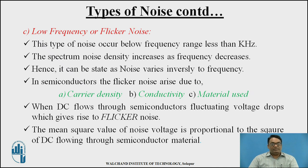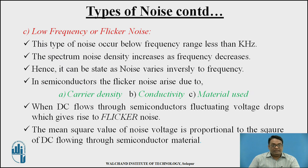Low-frequency noise, or flicker noise, occurs below frequencies in the kilohertz range. The noise spectrum increases as frequency decreases, meaning noise varies inversely proportional to frequency. In semiconductors, flicker noise arises due to carrier density, conductivity, and material used. When DC current flows through semiconductors, fluctuations give rise to flicker noise, and its mean square voltage is proportional to the square of the DC current flowing through the semiconductor material.